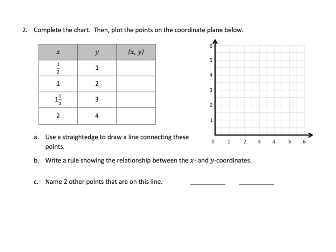Again, we need to do something similar with number 2. First, we need to complete the chart. And that, as we've seen in the previous slide, is very easy. I have 1 half comma 1. I have 1 and y of 2. I have 1 and a half and 3. And I have 2 and with a y of 4.